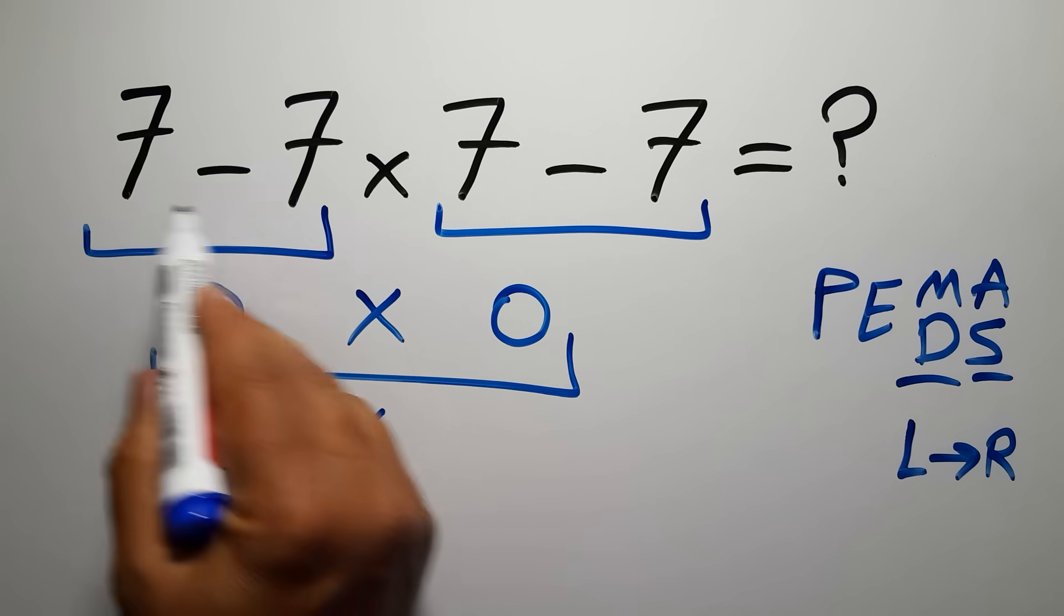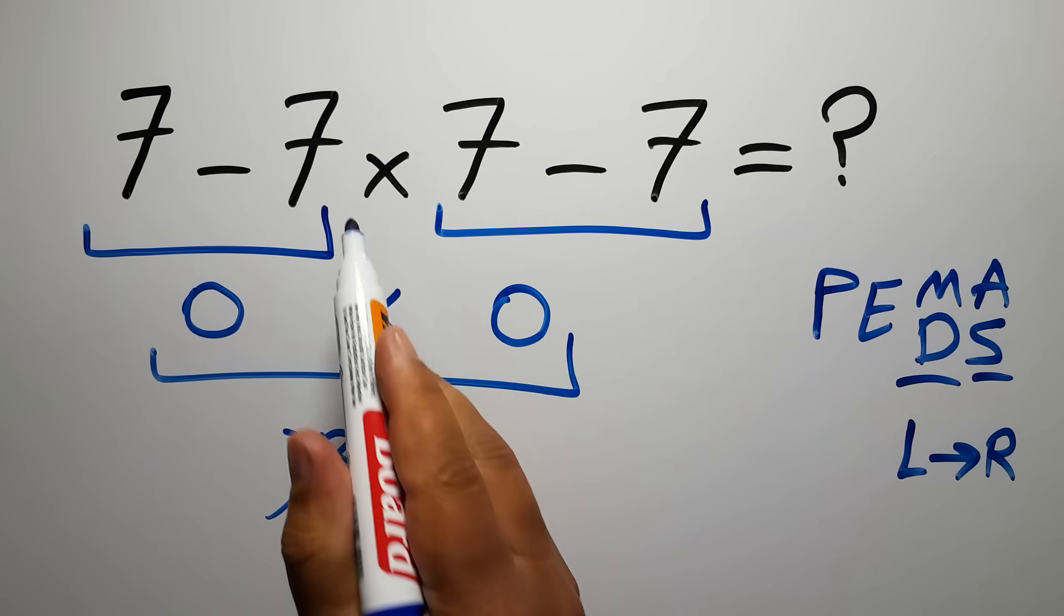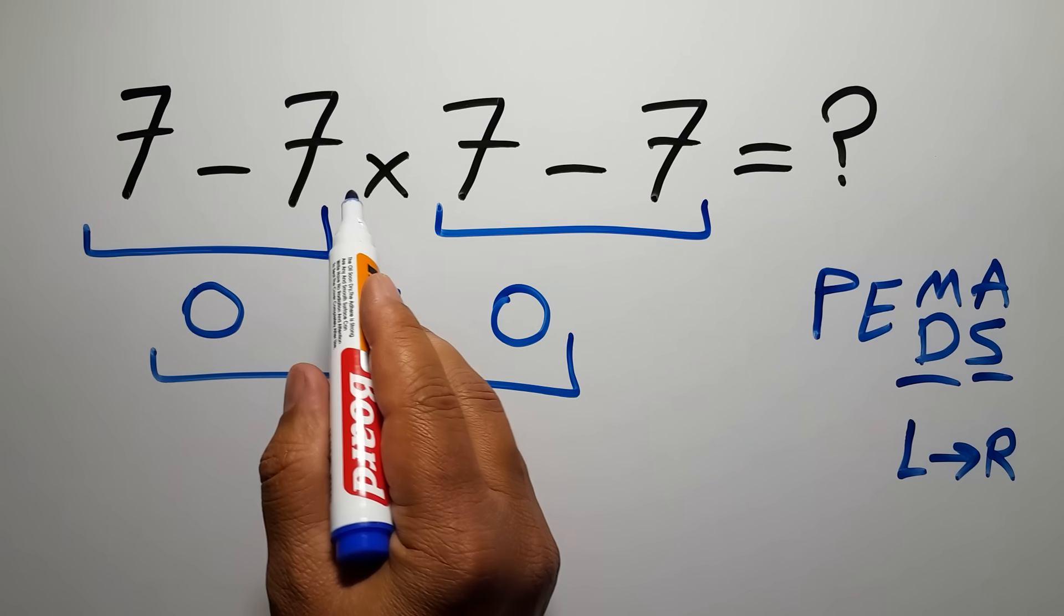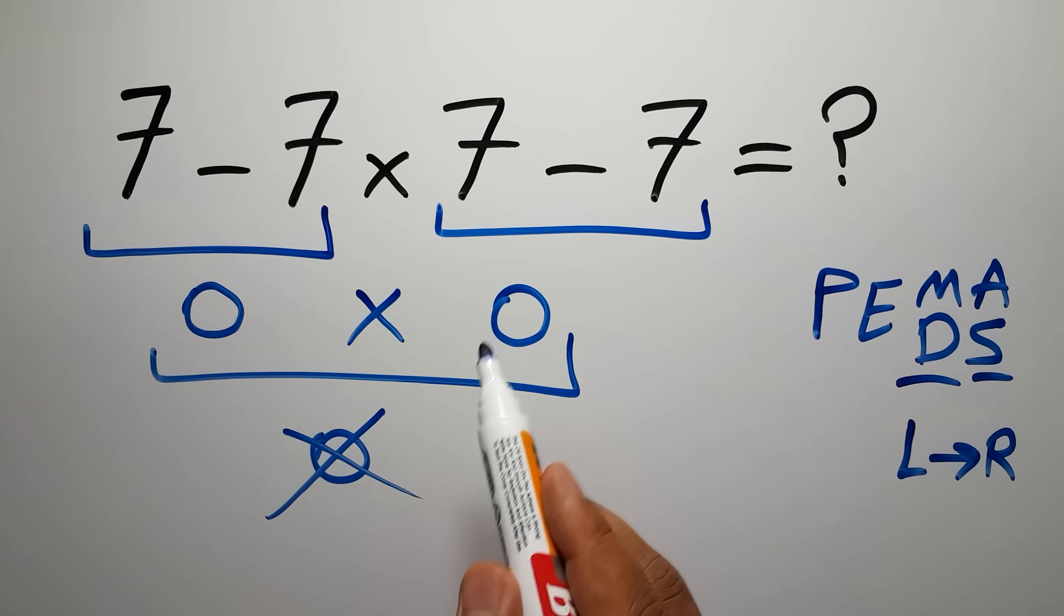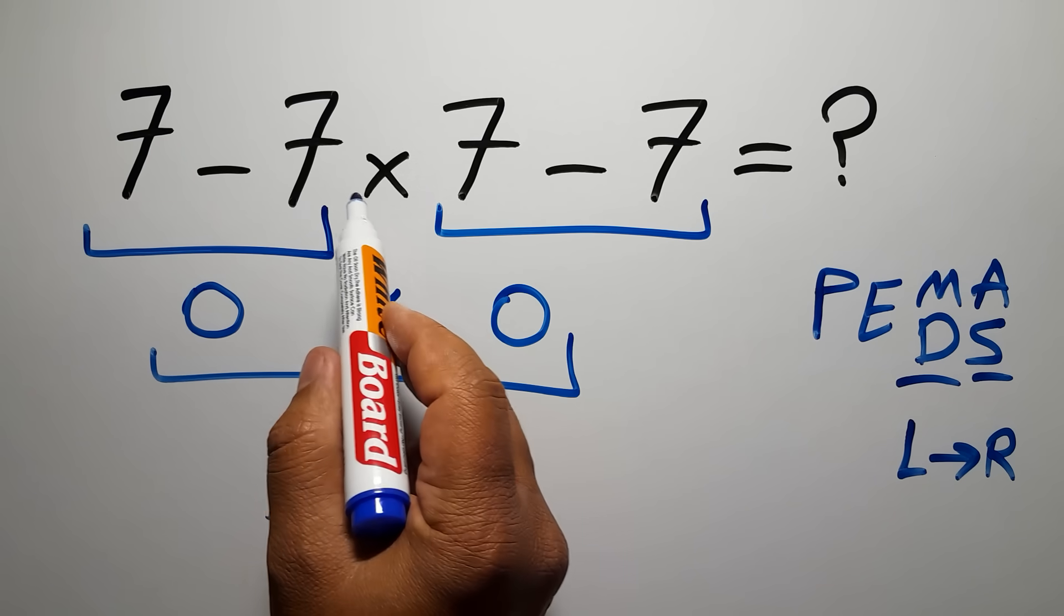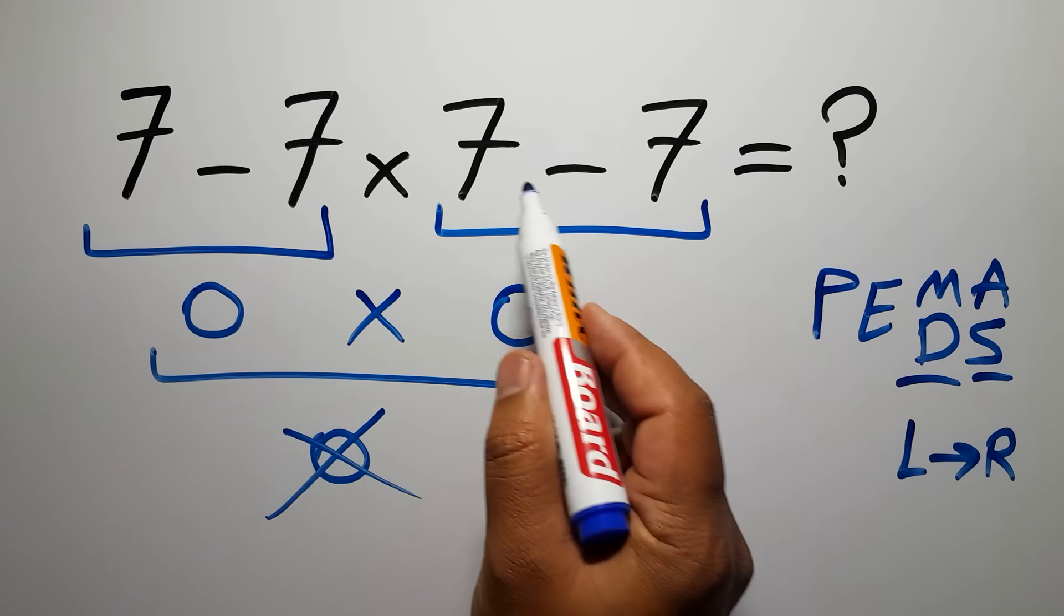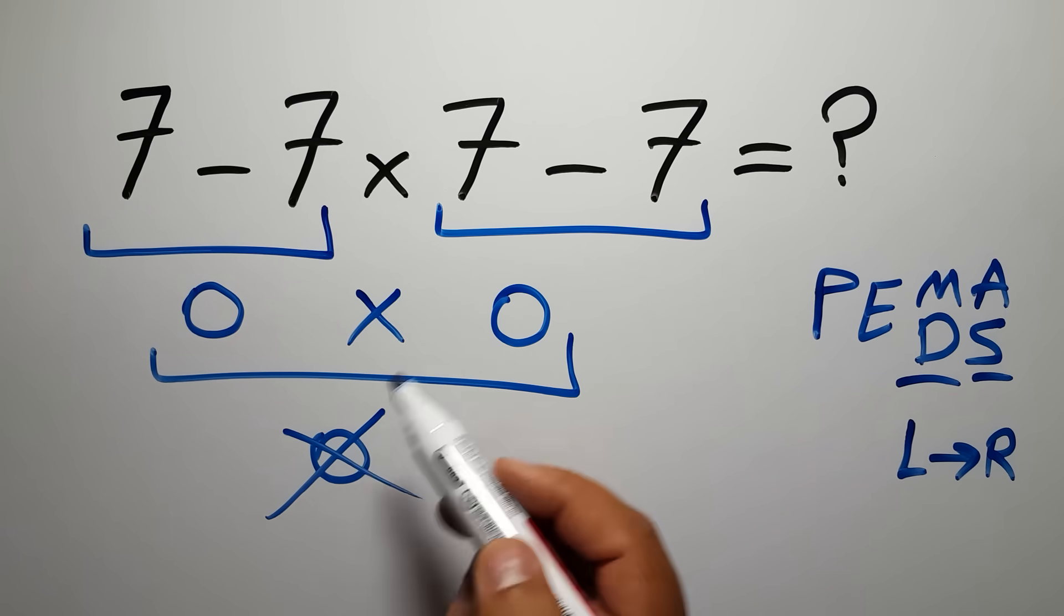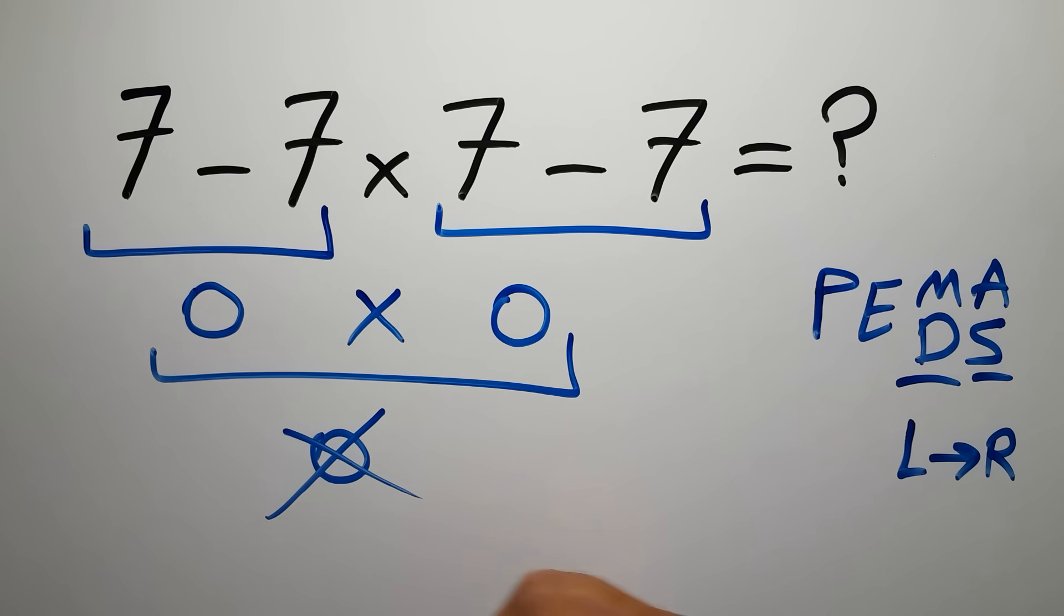In this expression we have two subtractions and one multiplication. Multiplication has higher priority than subtraction, so first we have to do this multiplication, then this subtraction, and finally this subtraction. If you do either subtraction before the multiplication, it is wrong.